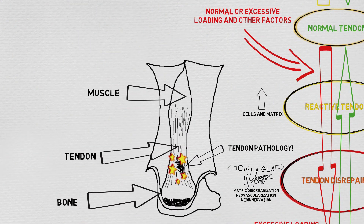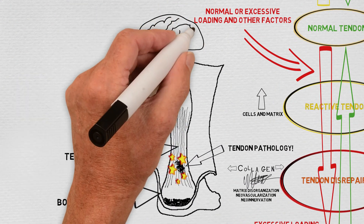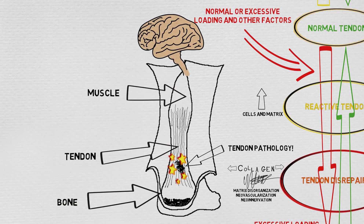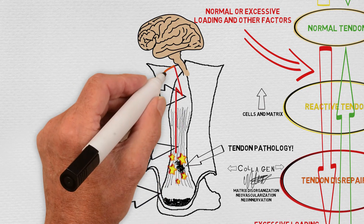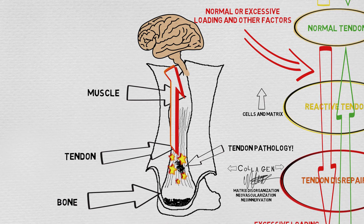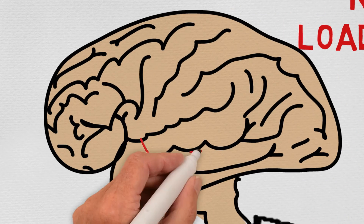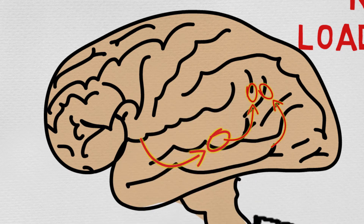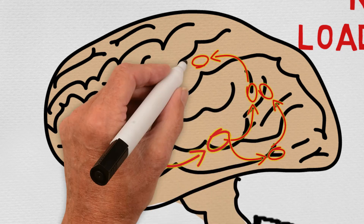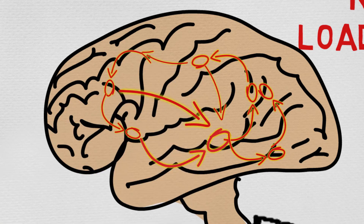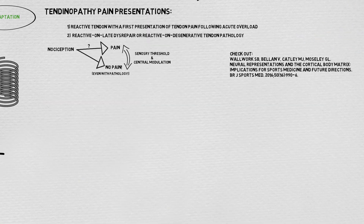Cook et al. did not go into more detail on the modulation of the central nervous system as this is well described by others. I would suggest looking at the recent paper by Wallwork, Bell, Kate Lee, and Moseley in BJSM in 2015, which discusses the idea of a cortical body matrix or a network of neurotags which interact to regulate, control, and protect the body. The takeaway point is that tendon pain should be considered to be a combination of nociceptive and centrally driven phenomena.